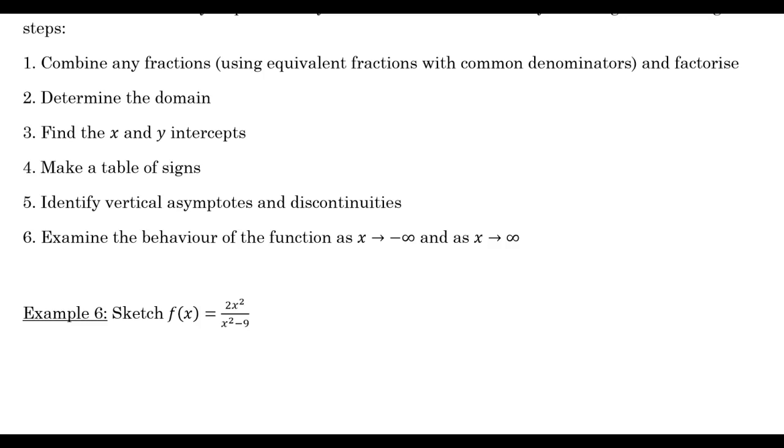Vertical asymptotes. So when the denominator is equal to zero and the numerator is not equal to zero, so the bottom zero, the top isn't, I've got an asymptote. Where the bottom is zero and the top is also zero, I've got a discontinuity. Where the top is zero but the bottom is not, then I have what we call a zero, a root, then we cross the x-axis. So we do that. That's our vertical asymptotes and discontinuities.